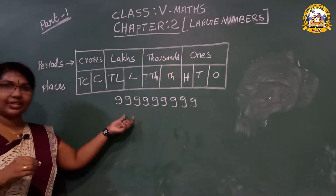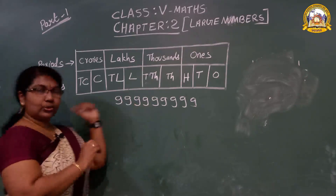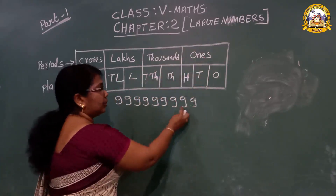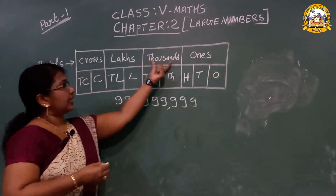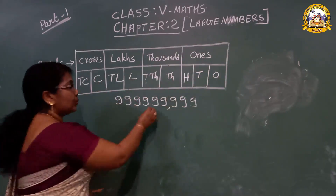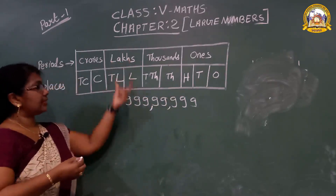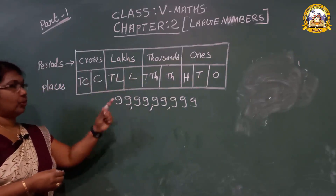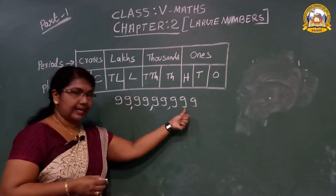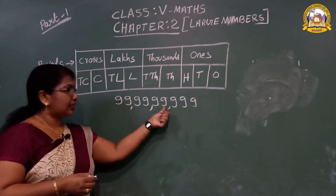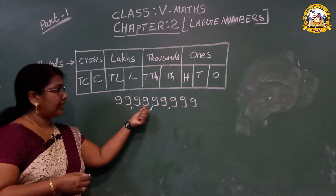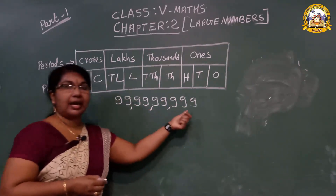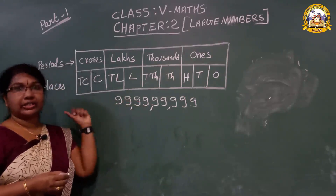How many 9s are there, students? Nine 9s. How to use the comma? First period: how many places? Three — 1, 2, 3. Then second period: 2. Then third lakhs: 2. Then last crore's place: 2. So: 1s, 10s, 100, 1000, 10,000, lakh, 10 lakh, crore, 10 crore. This is the largest 9-digit number.